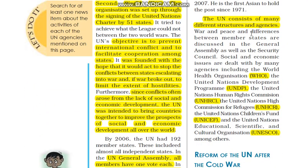The United Nations was established after the Second World War. The United Nations Charter was signed by 51 countries. The objective of the UN was that there would be no international conflict. They would make peace, and also provide states a framework for cooperation — to cooperate with each country.